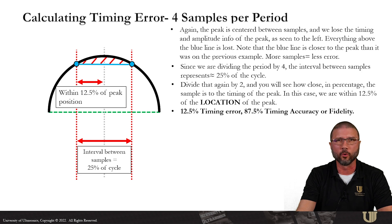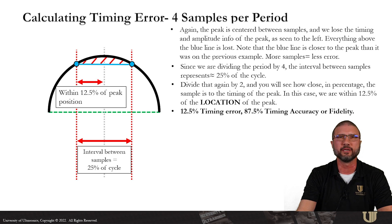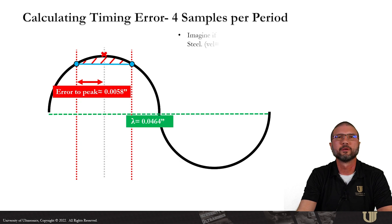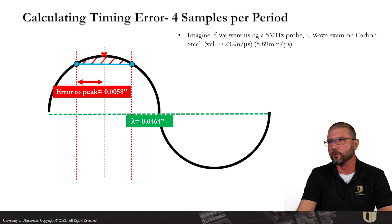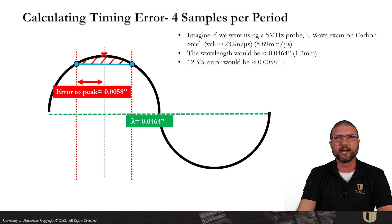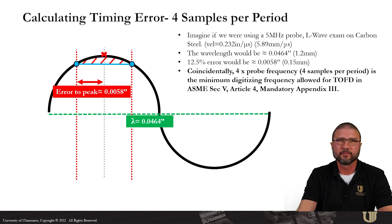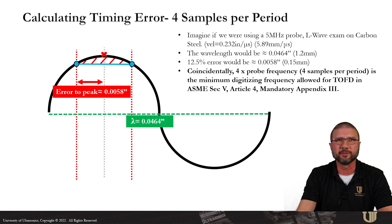Since we're dividing the period by four, the interval between samples represents about 25% of the cycle. Divide that again by two and we can see that we're within 12.5% of the location of the peak — a 12.5% timing error. For a 5 megahertz L-wave exam on carbon steel, that 12.5% error would equate to about five or six thousandths of an inch, about 0.15 millimeters. Coincidentally, four times the probe frequency is the minimum digitizing frequency allowed for TOFD in ASME Section 5, Article 4.